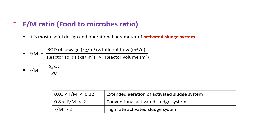The next formula is the F/M ratio — the food to microbes ratio — which is mainly related to the activated sludge system used for wastewater treatment. F/M = (BOD of sewage × influent flow rate) divided by (reactor solids × reactor volume). If F/M is between 0.03 and 0.32, the system requires extended aeration. If it is between 0.8 and 2, it is a conventional activated sludge system. If it is greater than 2, a high-rate activated sludge system is required.